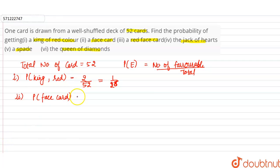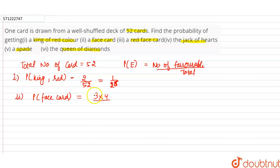Face cards are king, queen, and jack. Each type has four cards. So total number of face cards will be equal to 3 into 4, divided by total 52. So this is equal to 12 divided by 52.